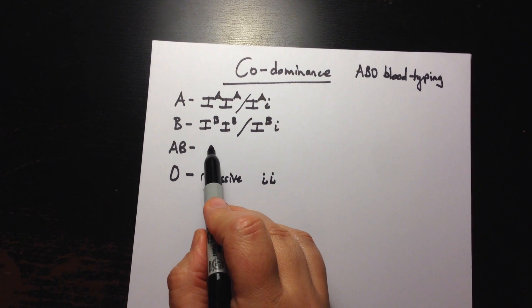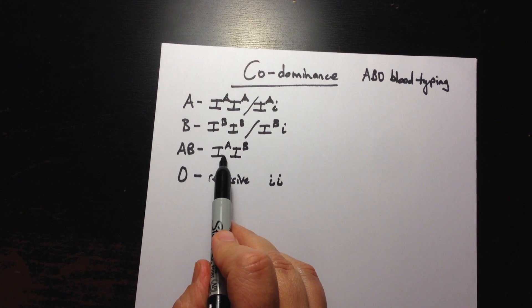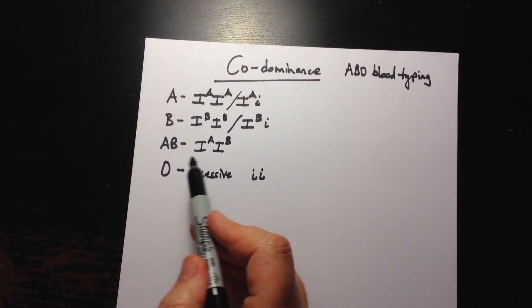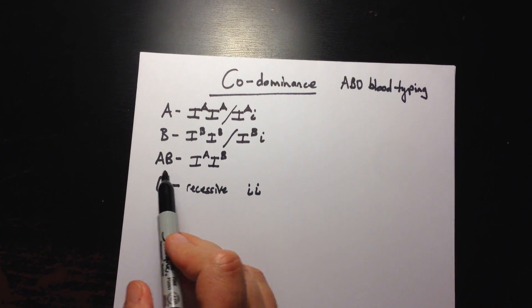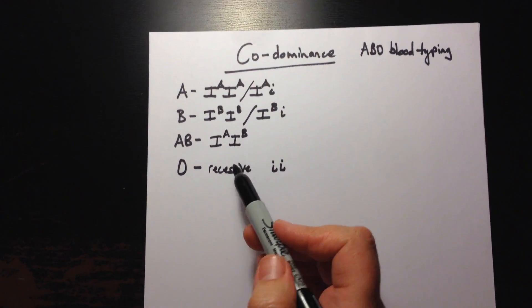What is interesting though is that type AB blood is co-dominant. So you have both the A and the B allele and they are equally shown and that's why we call that blood type AB. So it's not a mix of blood A and blood B, it's actually a unique blood type.